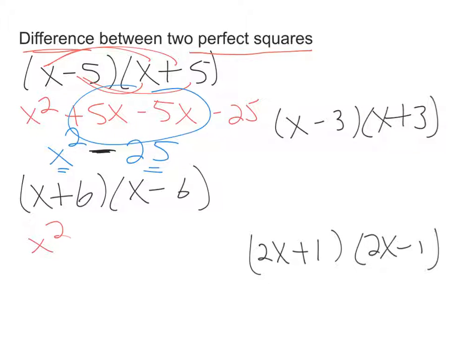So this one here is simply x squared minus 36. x minus 3, x plus 3: x squared minus 9. 2x plus 1, 2x minus 1 would be 4x squared minus 1.